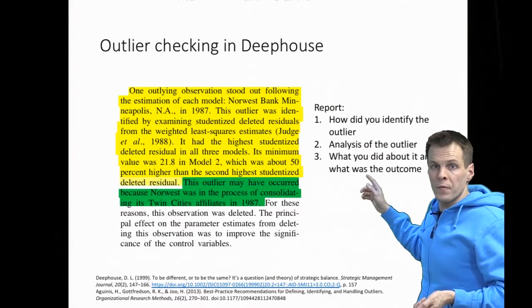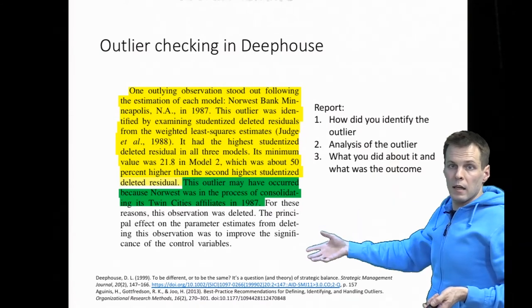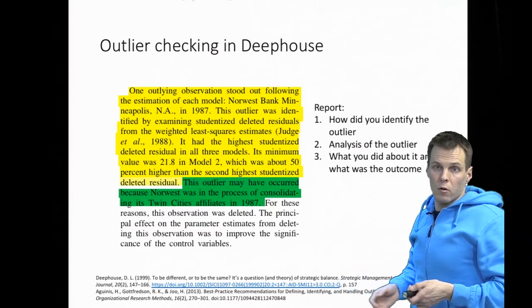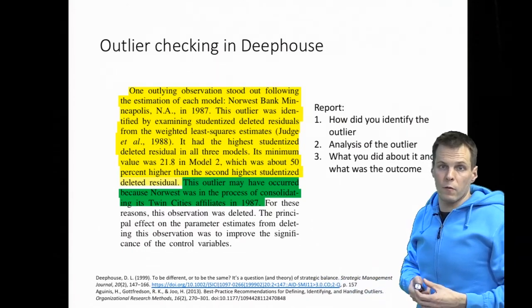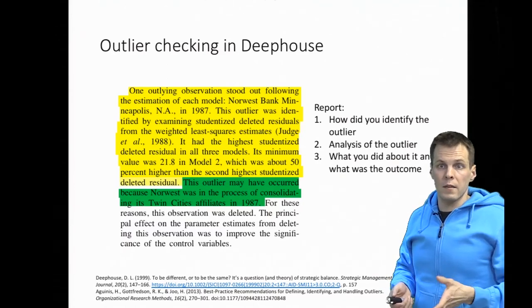That's the third step: explain what you did and what was the outcome of doing so. They explain what was the effect of dropping the outlier and conclude that it didn't really make a difference whether they included that observation in the sample or not. That's a very good example.